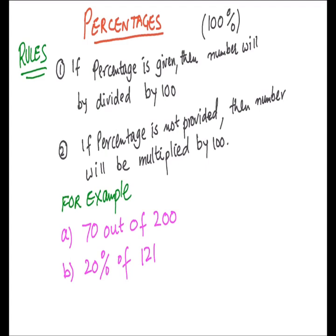Then we can go towards Part B. In Part B it is 20% of 121. In this case, percentage is provided. So what we can do is we have to multiply: 20 divided by 100 and multiply by 121. And in the first case, we have to divide 70 by 200 times 100. So if percentage is provided, you divide by 100, and if percentage is not given, you multiply by 100 to calculate the percentage.